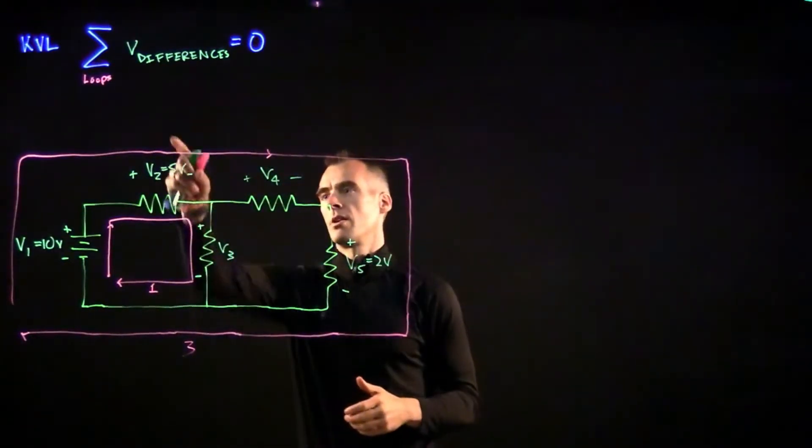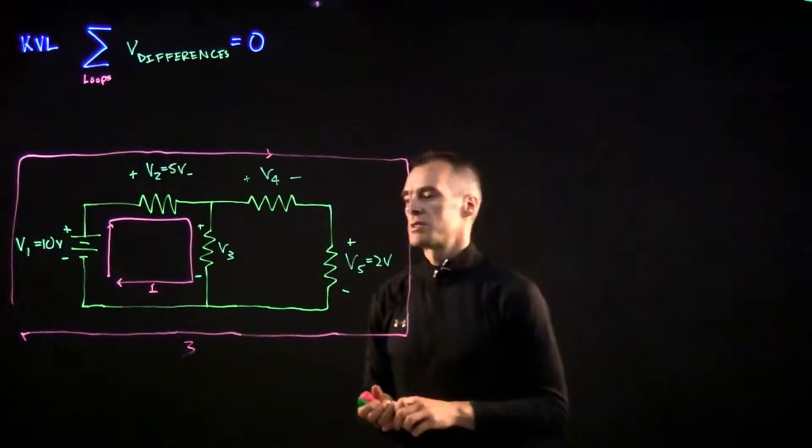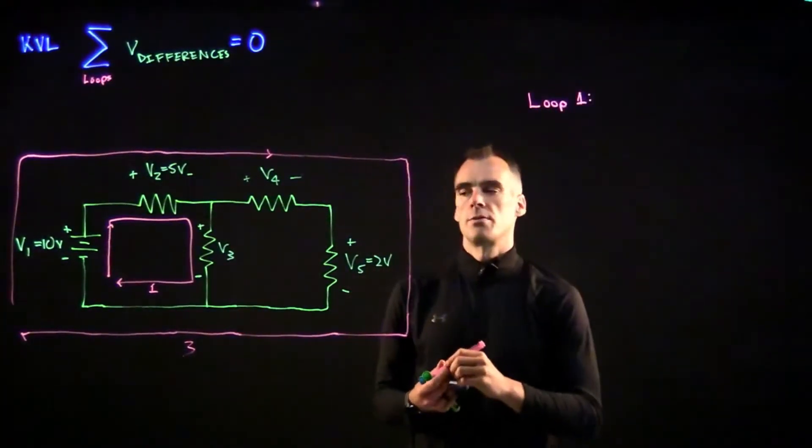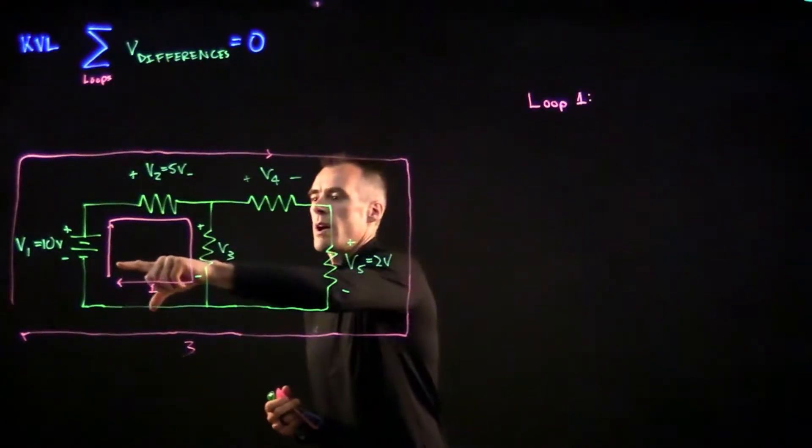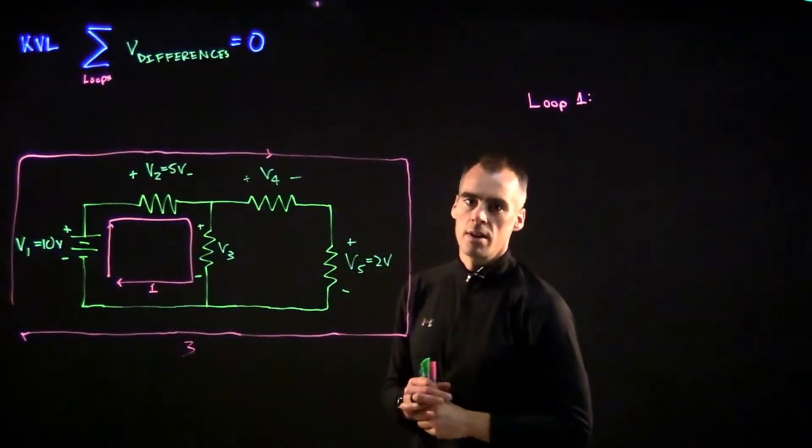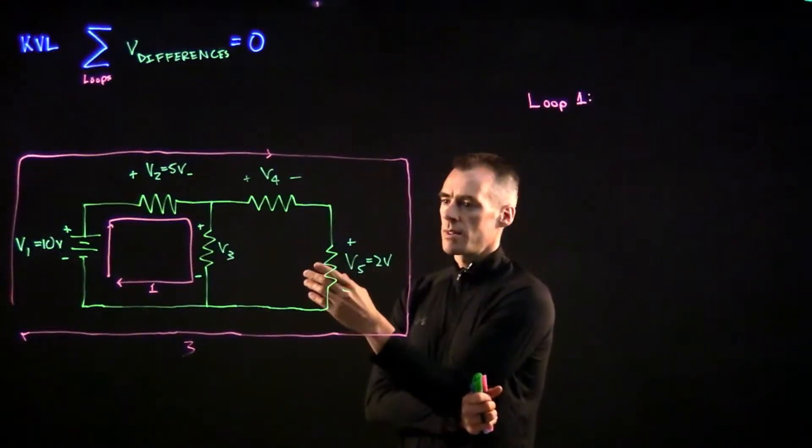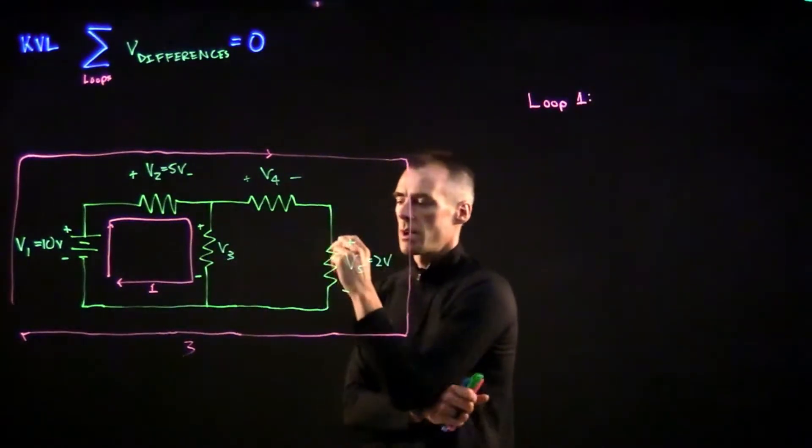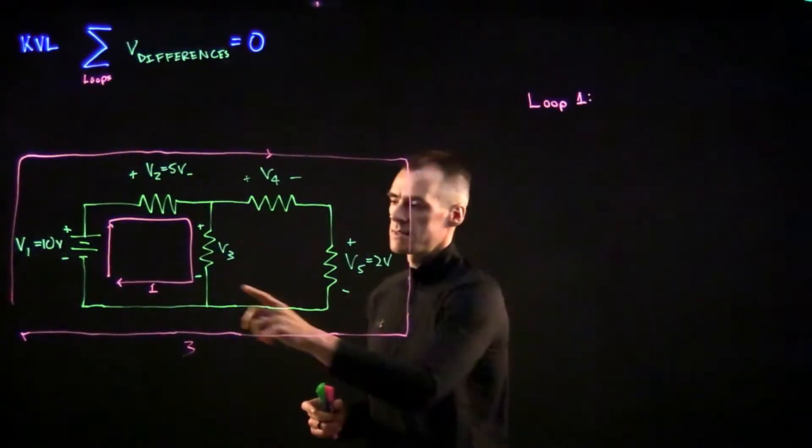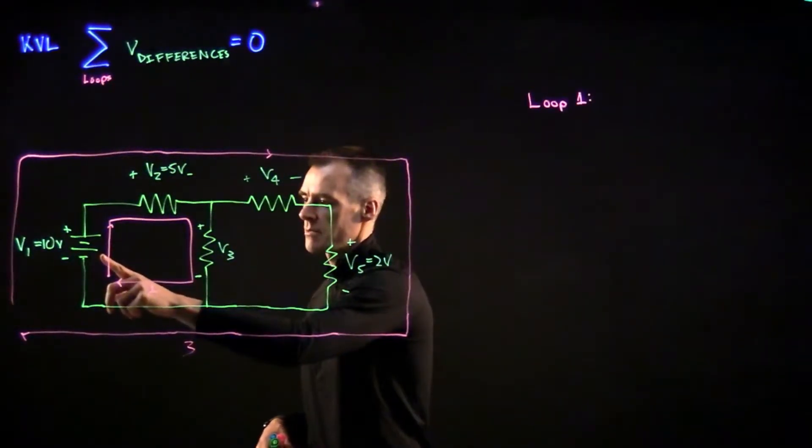So we can use this basic equation. Let's go ahead and look at our first loop, loop one. For loop one, what we're going to do as we go around is sum up those voltage differences. It's important to make sure that we're consistent with these plus and minus signs as we sum it up. So say we're going to start here, and just to be consistent, let's go ahead and start with this minus sign for V1.